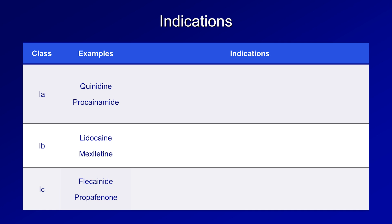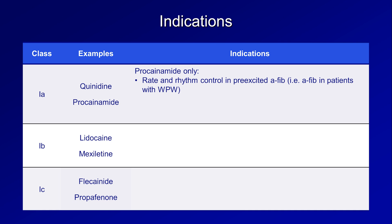Procainamide isn't particularly common either, but it is used for both rate and rhythm control in pre-excited AFib — this is when a patient with Wolff-Parkinson-White syndrome develops atrial fibrillation. While most patients with AFib are rate controlled with beta-blockers or calcium channel blockers, those drugs only significantly impact the slow response action potential of the sinus and AV nodes. Thus, if a patient has an accessory conducting pathway that bypasses the AV node — the defining feature of Wolff-Parkinson-White — those AV nodal blocking drugs don't help, and are believed to be actually very dangerous in pre-excited AFib. Procainamide, on the other hand, slows down conduction in the accessory pathway.